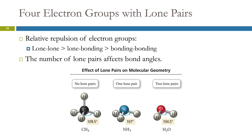We should understand the relative repulsion of electron groups. Lone pair-lone pair has the greatest repulsion. Lone pair-bonding pair is in the middle. And two bonding pairs have the least repulsion. The number of lone pairs affects the bond angles. Here's no lone pairs - we get this ideal tetrahedron. One lone pair, the atoms get squeezed a little together. And with two lone pairs, they get squeezed together even more.